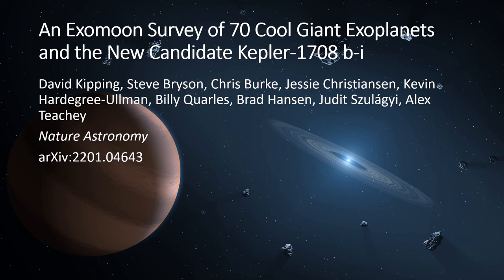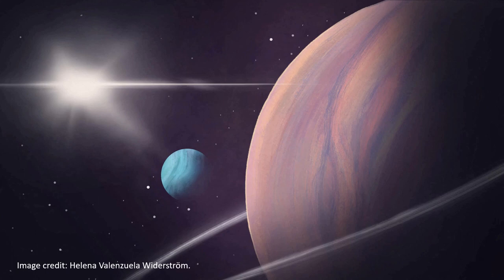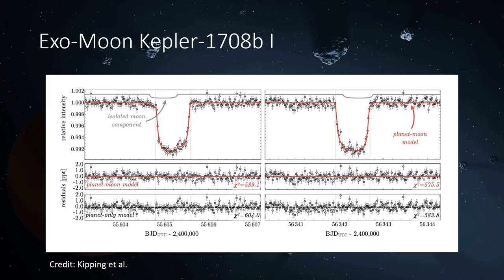This object was discovered by David Kipping and his team, who have been working on exomoons for many years. They discovered the previous exomoon candidate, Kepler 1625b-I, and this new one looks very similar to it. That is very unusual because it's nothing like what we expected — this is a Neptune-sized moon orbiting a Jupiter-sized planet. The exomoon was discovered by looking carefully at transit light curves, which you get when the planet passes in front of its star and blocks some of the light. The amount of starlight received by the telescope dips by a fraction of a percent.